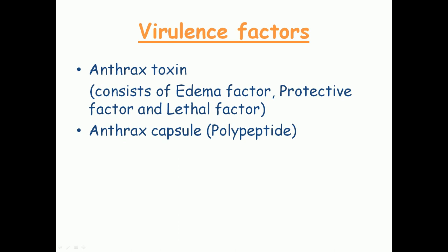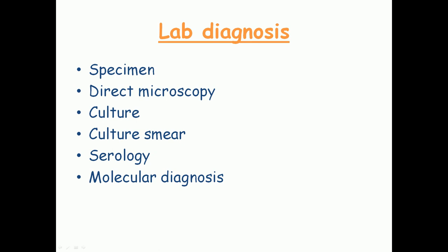The virulence factors of anthrax can be classified into two categories. The first is the anthrax toxin, which consists of three factors: the edema factor, the protective factor, and the lethal factor. The edema factor is mainly involved in causing edema; the protective factor binds to host cell receptors and helps the bacteria enter the host cell; the lethal factor is responsible for various severe manifestations of anthrax. The second virulence factor is the anthrax capsule, which is a polypeptide — made up of proteins — whereas the capsules of other bacteria are made up of polysaccharides, which are carbohydrates.